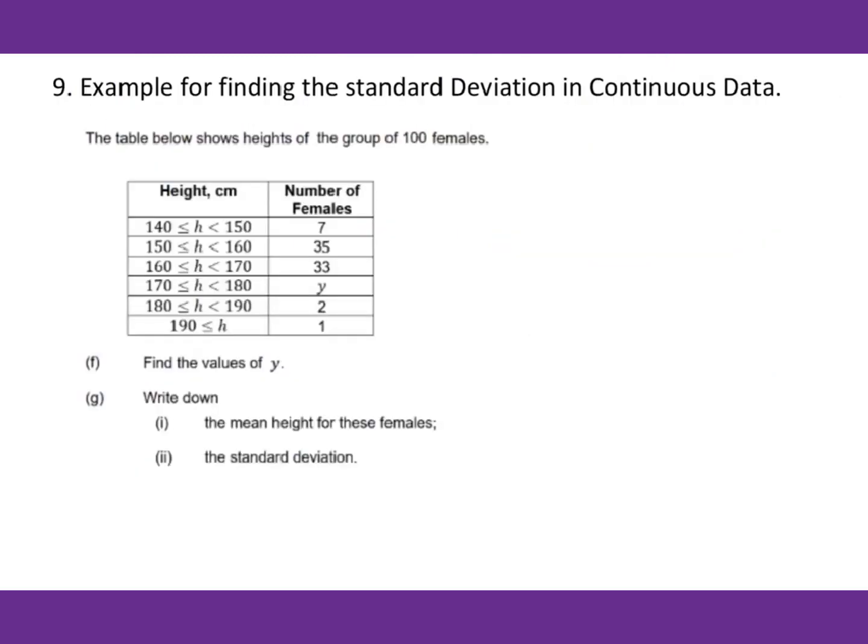Now let's go to Example 9. The table below shows height of the group of 100 females. Find the value of y. First of all, we know altogether it's 100. Therefore, for this y, you will get 100 minus 7 minus 35 minus 33 minus 2 minus 1. You will get 22. So y equals 22.